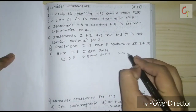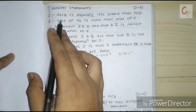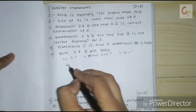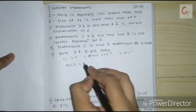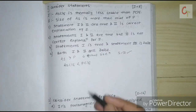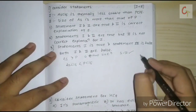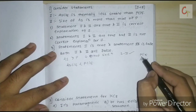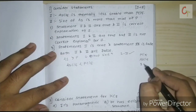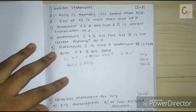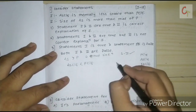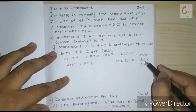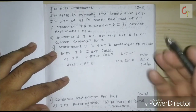Regarding the first statement: arsenic pentachloride is thermally less stable than PCl5, which is also correct. Thermal stability should increase going down the group — antimony chloride would be more stable than arsenic chloride. Actually, PCl5 and SbCl5 are stable while arsenic pentachloride is less stable.